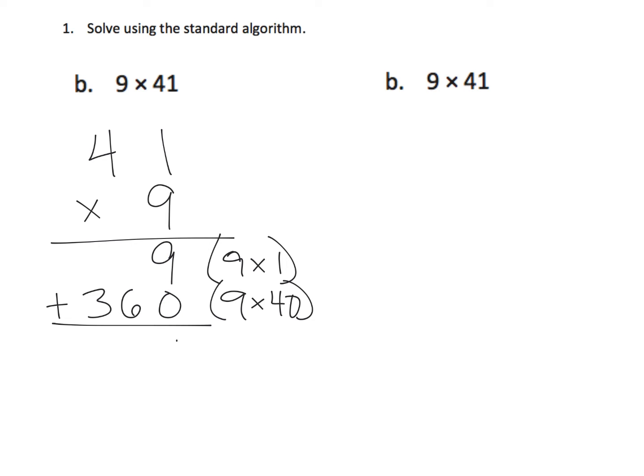The ones, 9 and 0 is 9, the tens, nothing and 6 is 6 tens, and similarly the 3 is the 3 for 300, so our product is 369, and that's using the partial products method.